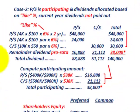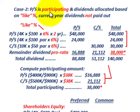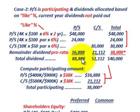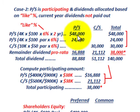Now let's look at Case 2. This is just an example to show how preferred stock can affect your common stock's dividends paid out and the retained earnings. In this case, the preferred stock is participating and dividends are allocated based on a like percentage. The current year dividends are not yet paid out. We'll calculate dividends for both preferred stock and common stock to show how allocation between them affects common stock.